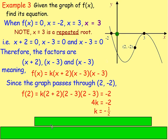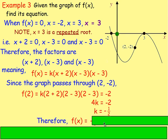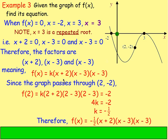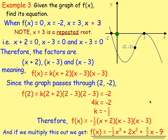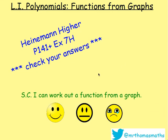Replacing k back into the equation, you get f of x equals negative one half times x plus 2, times x minus 3, times x minus 3. Multiply that out: multiply two brackets together, then multiply by x plus 2, and then multiply every term by negative one half. Simplify it, and you get f of x equals negative one half x cubed plus 2x squared plus three halves x minus 9. And that is how you get the equation from the graph. Try these questions on your own — see how you get on with exercise 7h.